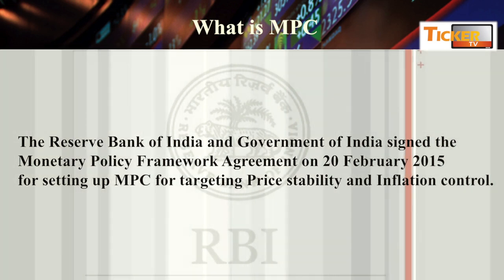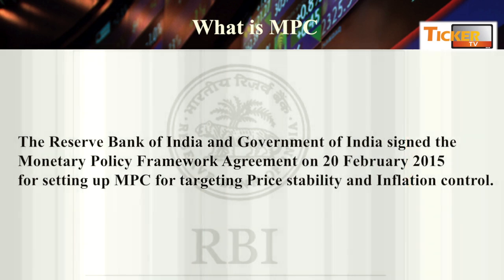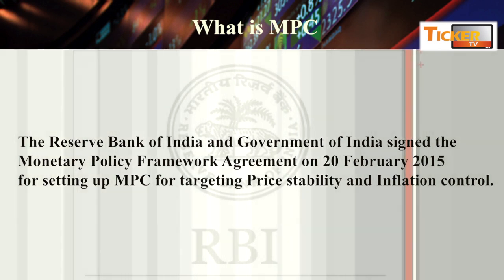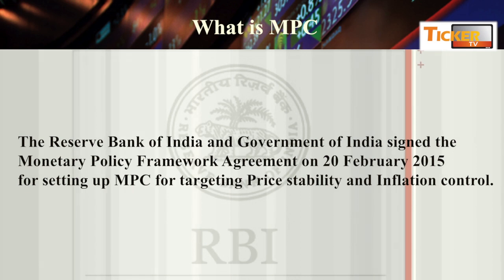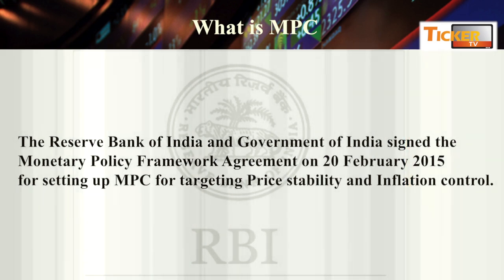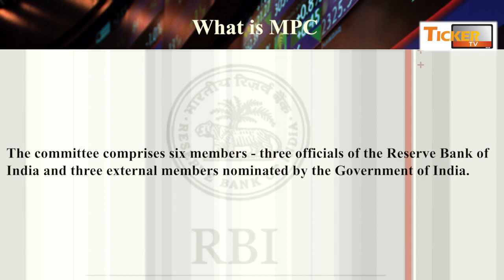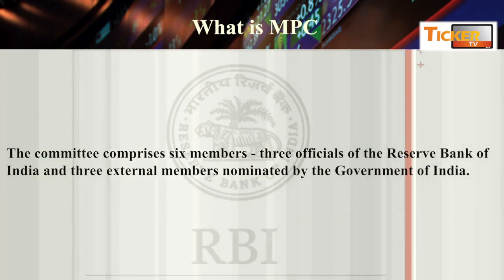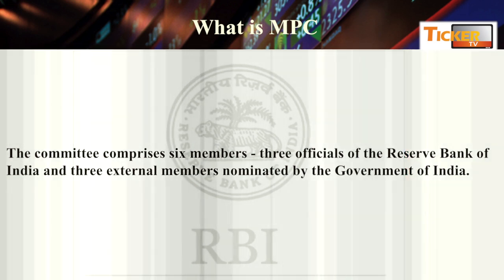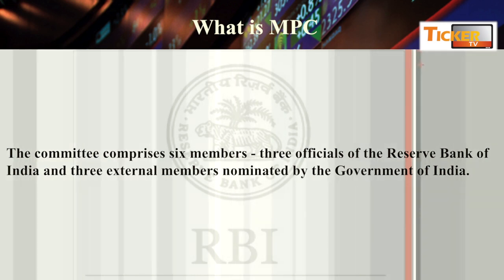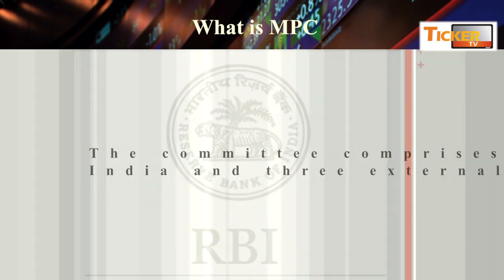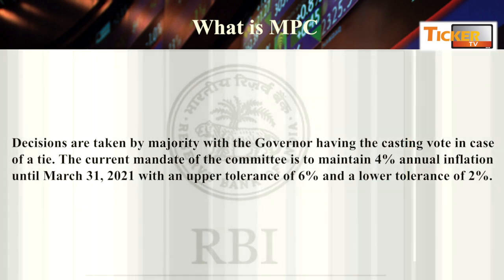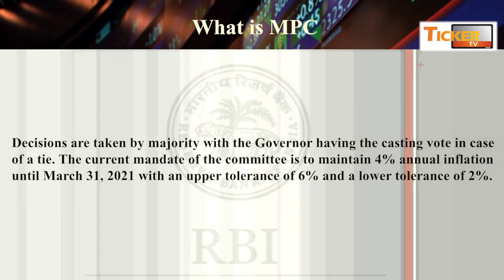Friends, monetary policy kya hoti hai aur kya framework hota hai? Around 2015, RBI and government ne ek MPC, which is Monetary Policy Committee, ka gathan kiya tha, jis ka target tha price stability and inflation control karna. Is mein six members hoti hai — three members RBI ke aur three members nominated from Government of India. All six members vote for certain policy rates, aur joh bhi majority hota hai, uska woh final outcome announce kar deti hai. Current mandate for inflation is 4% with plus or minus 2% tolerance.